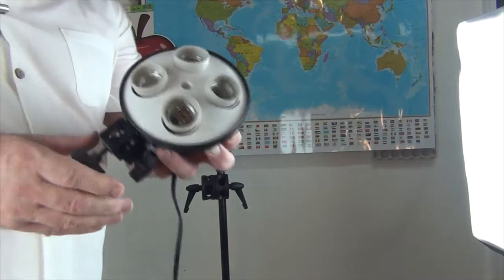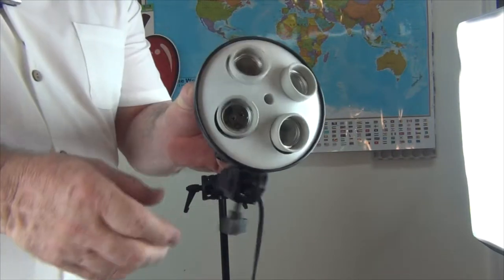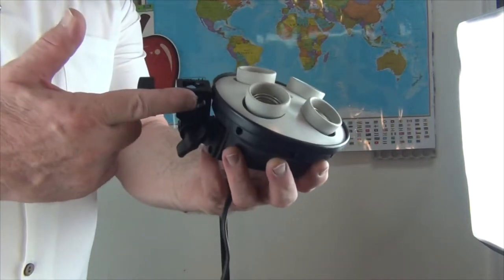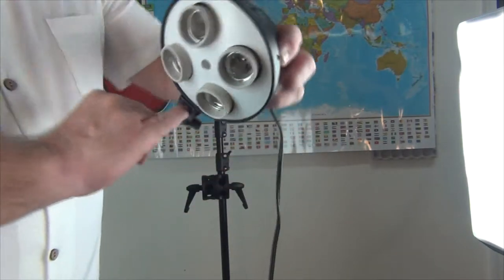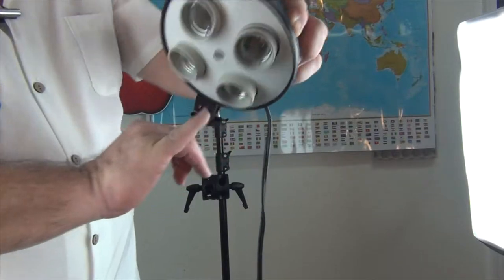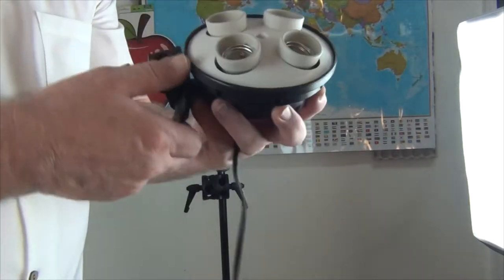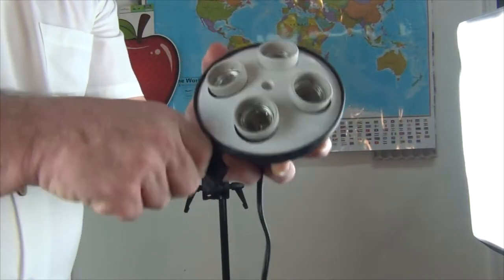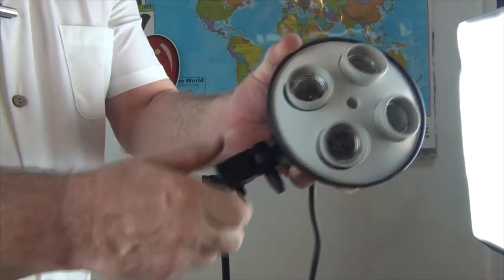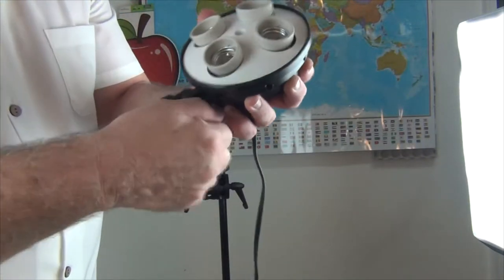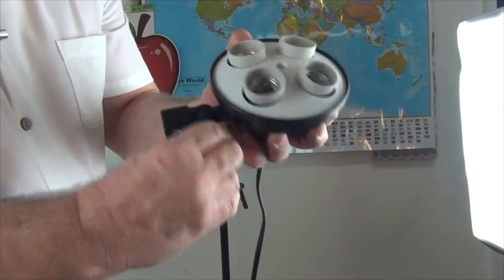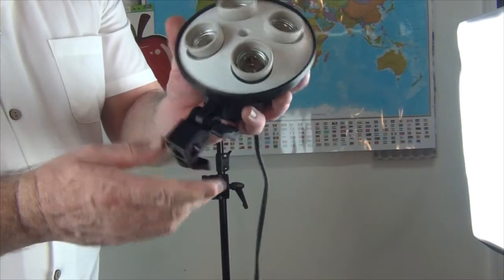When you take your light out of the box, this guy here is going to be configured like this. And that's the wrong way because it would be pointing straight down. And so what you need to do is loosen this wing nut. You can make it level or whatever angle you want. Tighten your wing nut back up. And you're good to go.